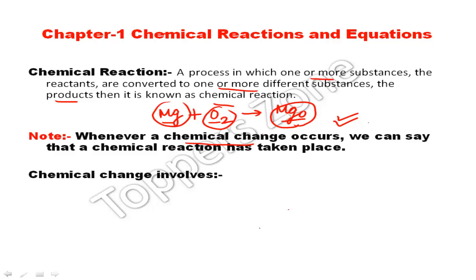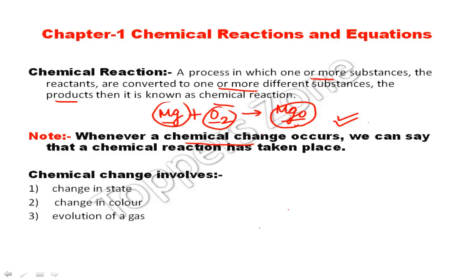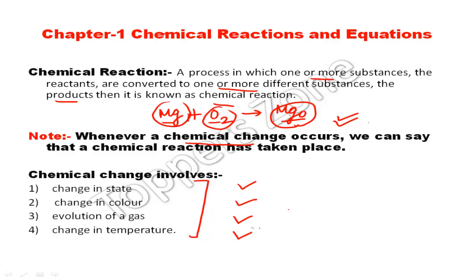Chemical change involves four things: first, change in state; second, change in color; third, evolution of gas; and fourth, change in temperature. When there is a chemical change, the state changes, the new product may also show a change in color, gas can evolve, and the temperature also changes. Heat can be involved or released in any reaction.